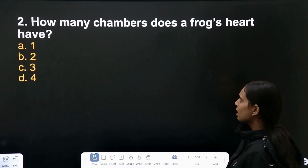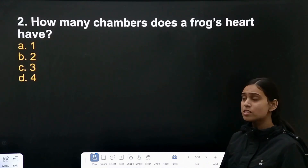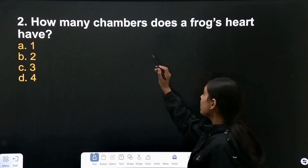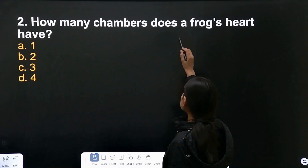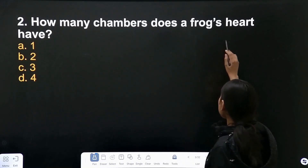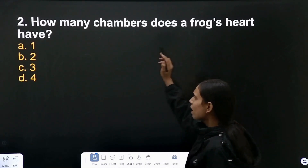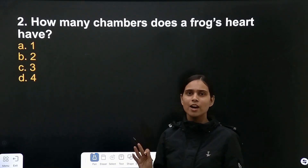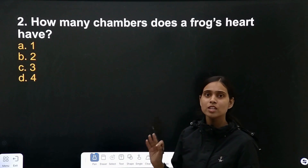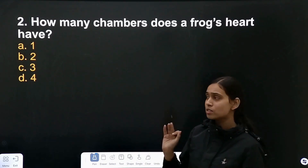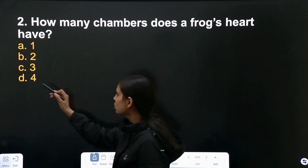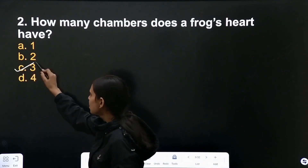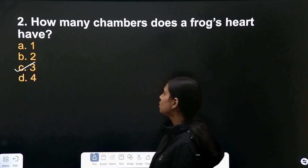Our second question is: how many chambers does a frog heart have? A frog heart has 3 chambers. So the correct answer is 3.